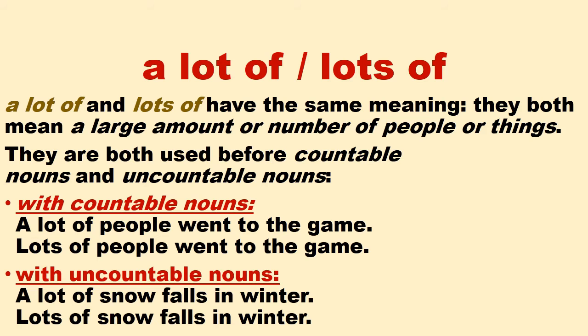Now I am going to explain 'a lot of' and 'lots of.' Remember, students, they both have the same meaning — they both mean a large amount or number of people or things. They are both used before countable nouns and uncountable nouns. For example, with countable nouns: 'a lot of people went to the game' and 'lots of people went to the game.' With uncountable nouns: 'a lot of snow falls in winter' and 'lots of snow falls in winter.'